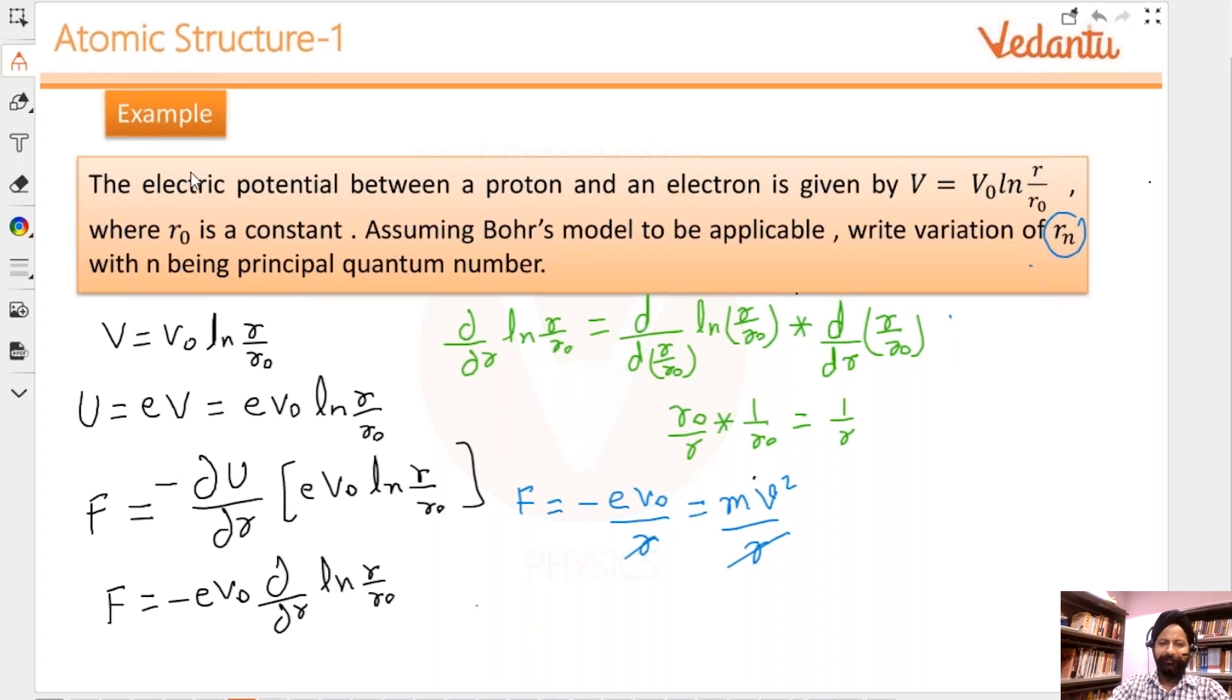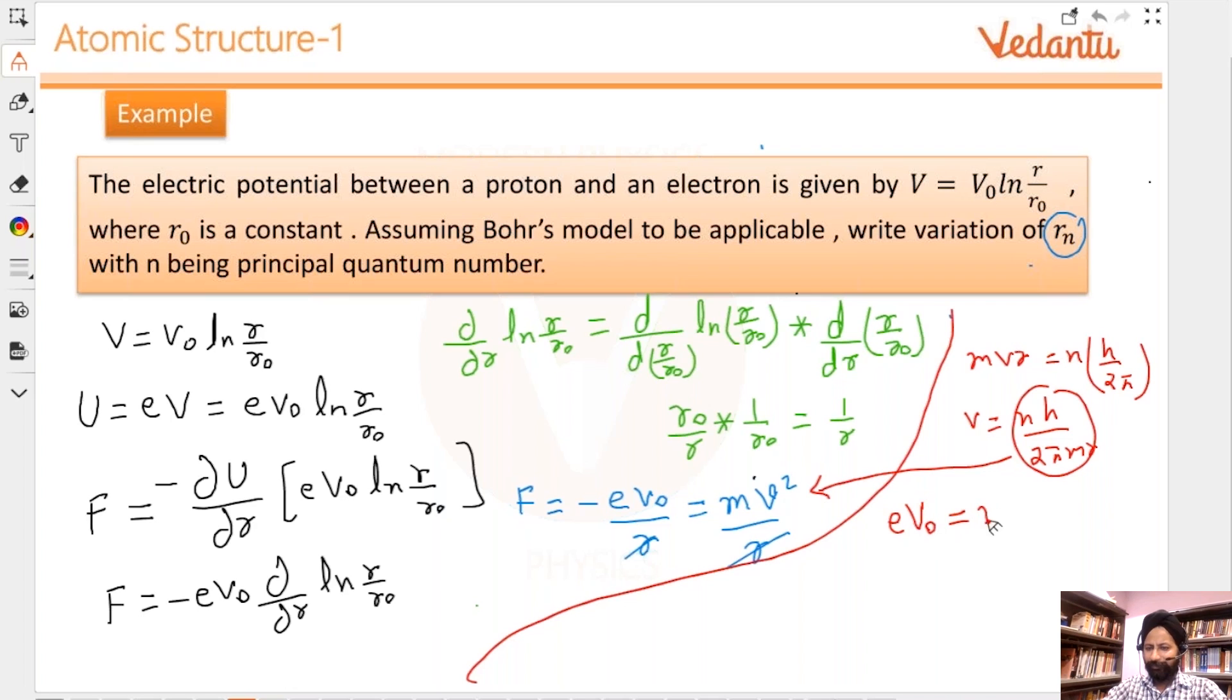I can go back to Bohr's postulates and say mvr should equal n times h/2π. From here, velocity is nh/2πmr. Then you plug this into the force equation. Ignore the negative sign, that's just the direction.